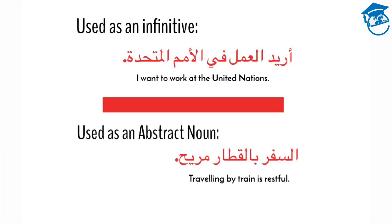Now let's look at a couple of examples of how it's used in each of these cases. First, when it's used as an infinitive. Look at the sentence. The sentence means: I want to work at the United Nations. In this example, the verb uridu — I want — is the primary verb of the sentence. Al-amal is the verbal noun, and it functions as an infinitive: I want to work.